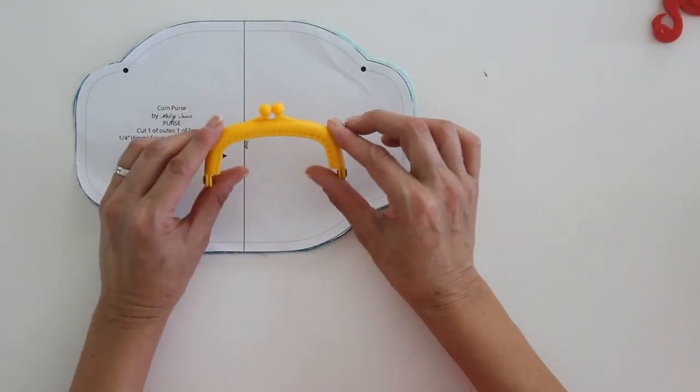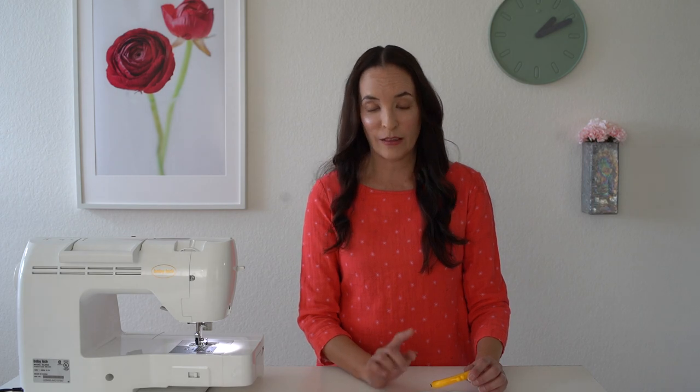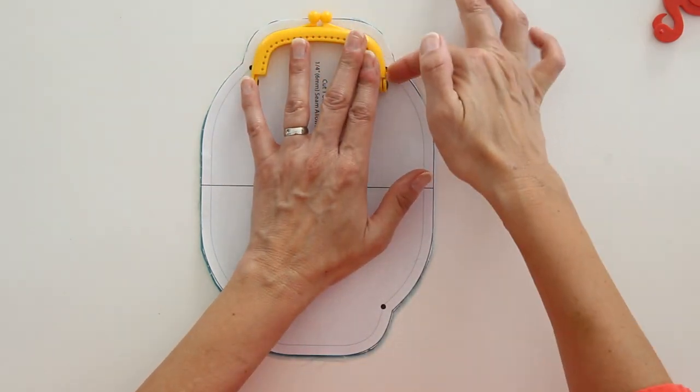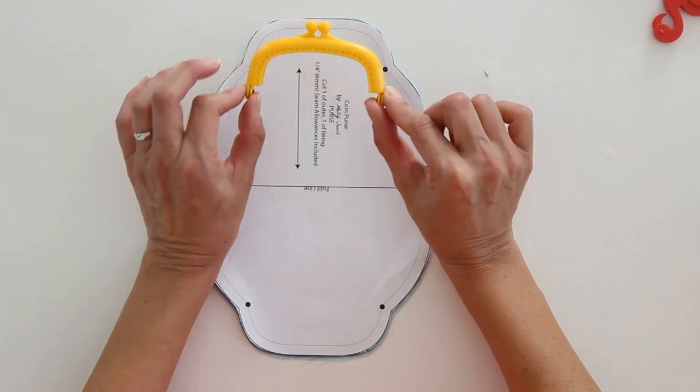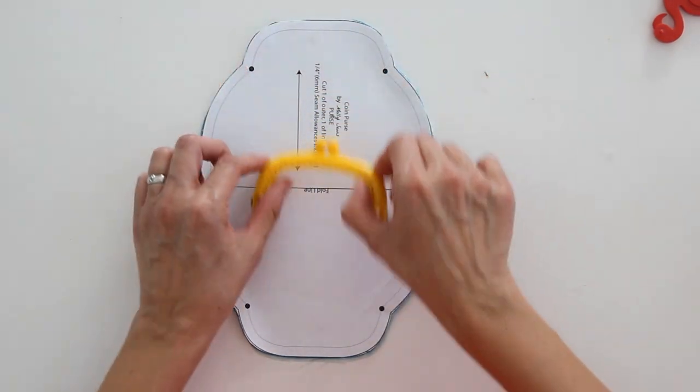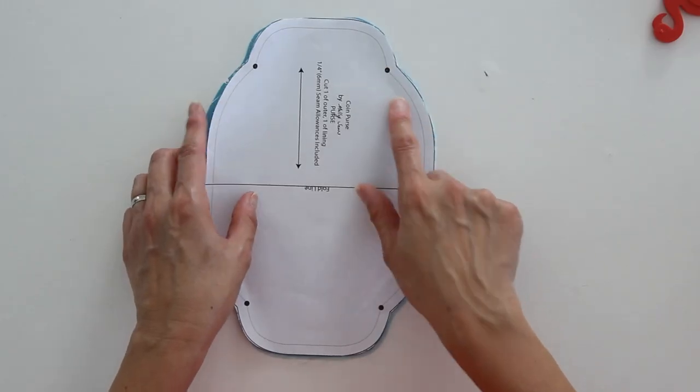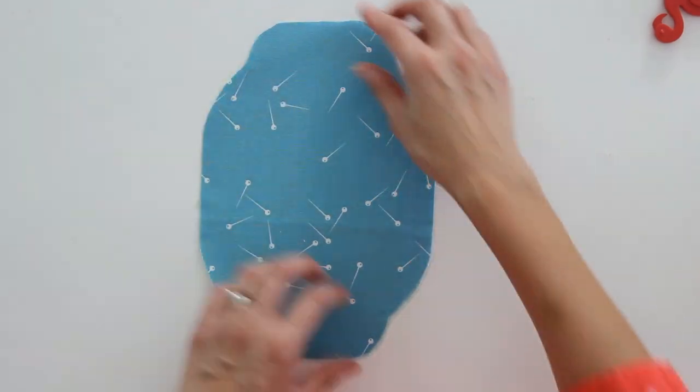And then you're going to need a purse frame, and I have linked the exact ones that I bought, but if you buy a different one, you want the seam line to match the outside edge of the frame. So if your frame is slightly different shaped than mine, then just redraw your pattern so that this part above the dots matches that outer edge of your frame. And then those dots, do make sure to transfer those to the insides or the wrong side of your fabric.